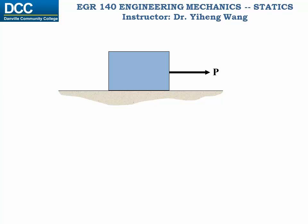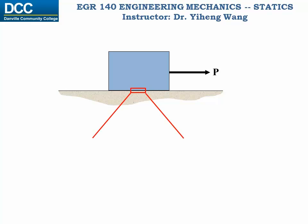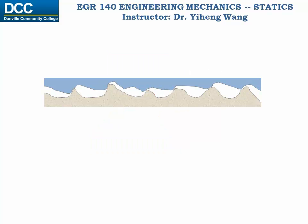Now let's analyze this further. If we zoom in on a small portion of the contacting surfaces, the seemingly smooth surfaces are actually rough, with ups and downs on both sides. If we zoom in even further and imagine pulling the top surface to move to the right, at these contacting points the top surface will be stopped by the bottom surface, and the bottom surface will exert forces R1, R2, R3, etc., to resist the motion of the top surface.